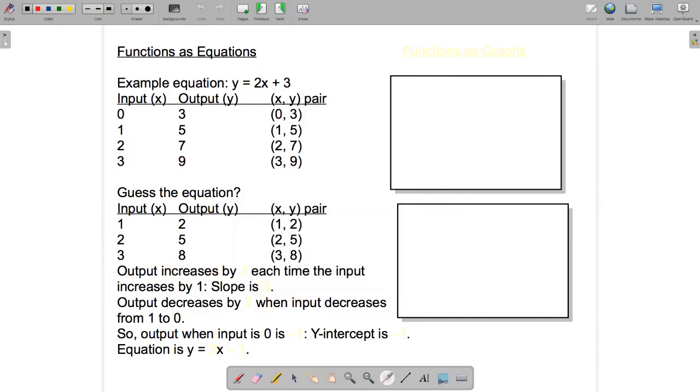What if we were given a table of inputs and outputs and we were told that there's a linear equation of the same form as this? In other words, a number times x plus another number. Could we guess that equation just by knowing some inputs and outputs? Well, let's see if we can figure it out. We're told for an input of 1, we get an output of 2. An input of 2, we get an output of 5. An input of 3, we get an output of 8. So each time the input goes up by 1, the output is going up by 3.